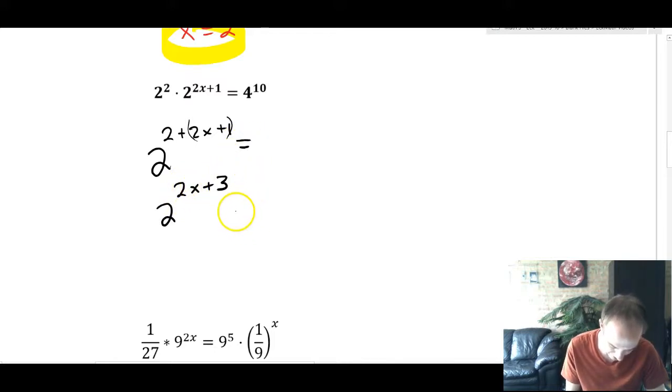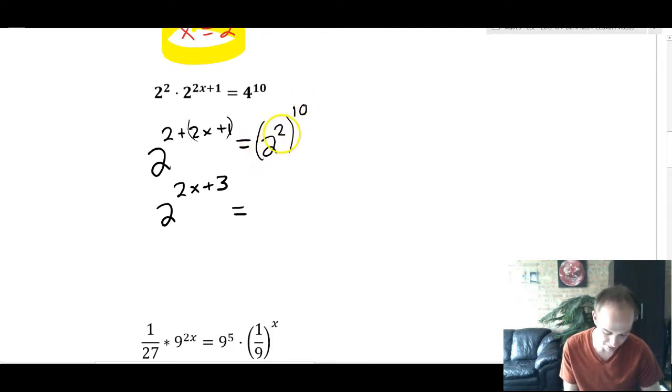So the 2x + 1 is this 2x + 1 here. This 2 is this 2 right here, which is the same as 2^(2x+3). All right, on the other side of the equation, 4^10. Well, I don't know what 4^10 is, and I made it a big number so that you couldn't just put it in your calculator. 4 is 2^2. So this is the same as (2^2)^10. And 2^2 to the 10th, we're going to multiply those exponents. So this is going to be 2^20.